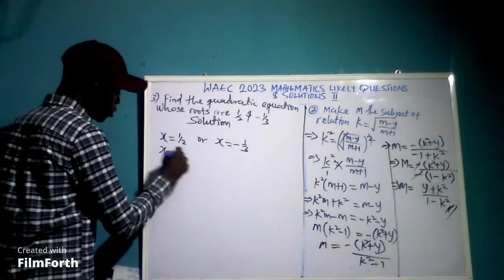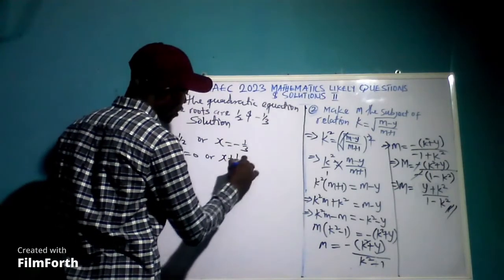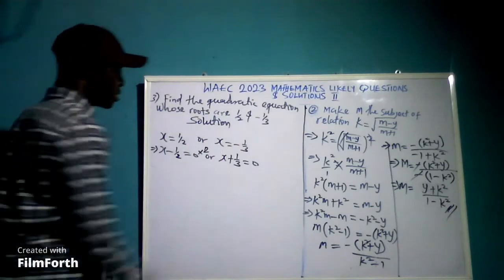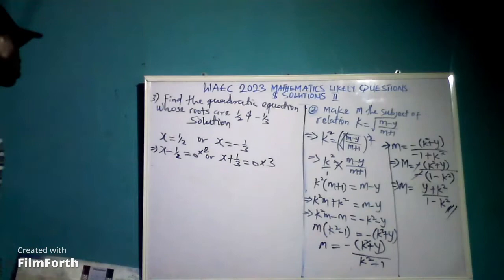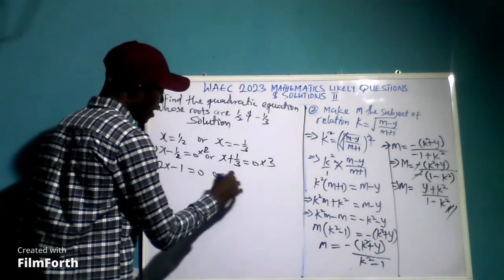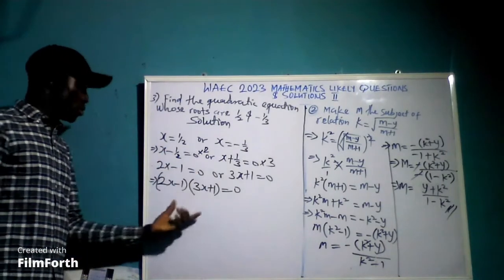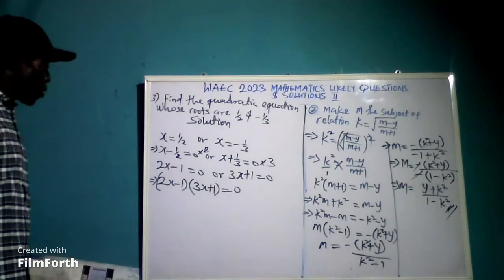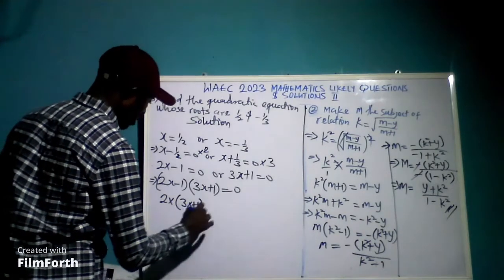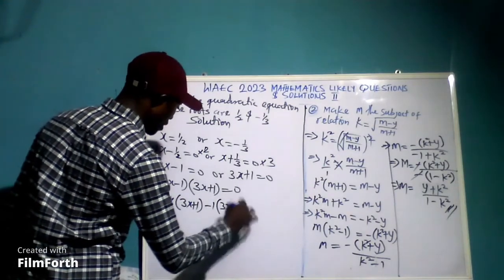We can bring the roots to one side and equate to zero, so that we have x minus one-half equals 0, or x plus one-third equals 0. To remove the fractions, multiply the first equation by 2 to get 2x minus 1 equals 0, and multiply the second equation by 3 to get 3x plus 1 equals 0.